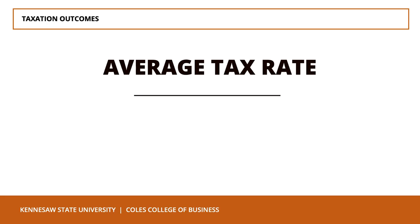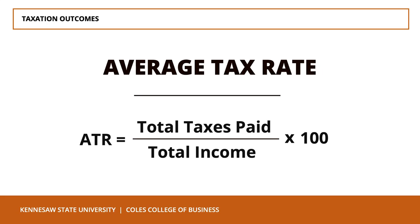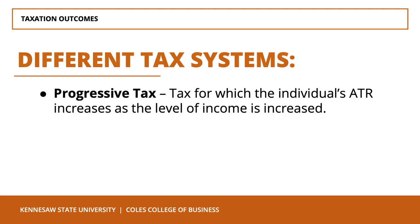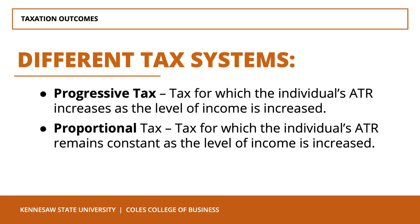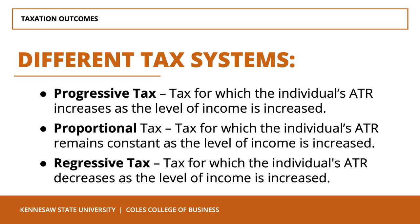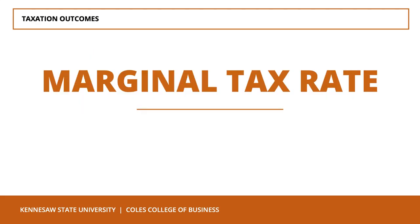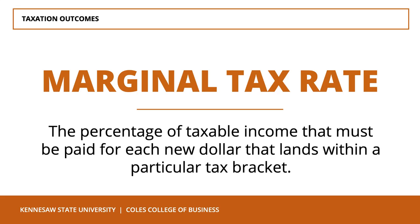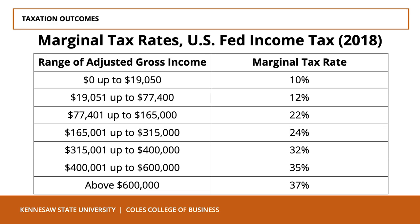Now let's turn to different tax systems and discuss the difference between an average tax rate and a marginal tax rate. An average tax rate is calculated as total tax paid divided by total income, multiplied by 100. Under a progressive income tax, an individual's average tax rate increases as income increases. Under a proportional income tax, the ATR remains constant. Under a regressive income tax, the ATR decreases as income increases. A marginal tax rate is the percentage of taxable income paid for each new dollar that lands within a particular tax bracket. The US uses a progressive tax system, and the following table shows marginal tax rates for those married filing jointly as of 2018.